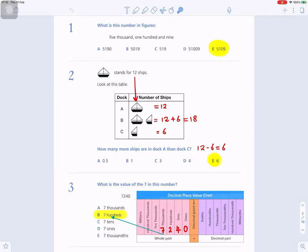Number three: What is the value of the 7 in this number? I have put a decimal place value chart there to help you. The number is 7,240. You wouldn't have this chart in an exam. You imagine in your head, the 7 goes in the thousands, the 2 goes in the hundreds, the 4 goes in the tens, the 0 goes in the ones.